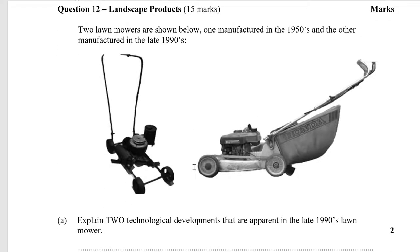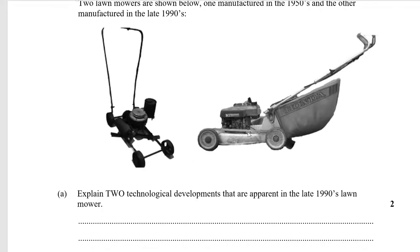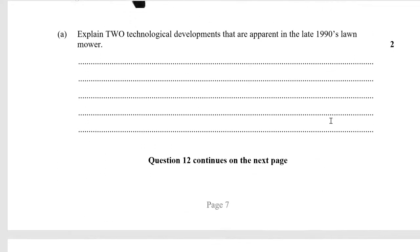Explain the developments between these two lawnmowers — you could say it has a catcher, uses lightweight metals, probably has a four-stroke rather than two-stroke engine, has a self-starter, and might use a composite material for the bag to make it stronger.